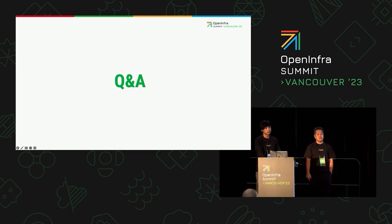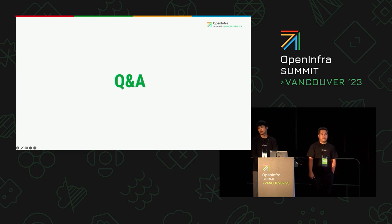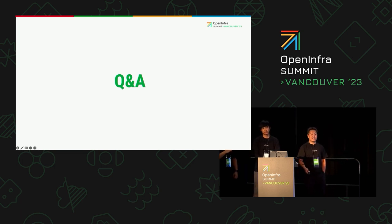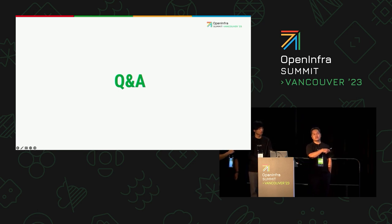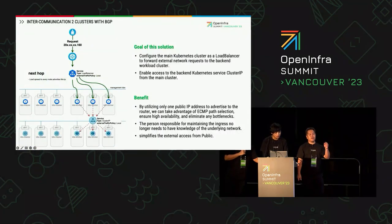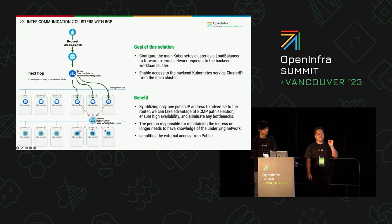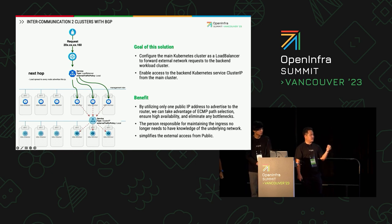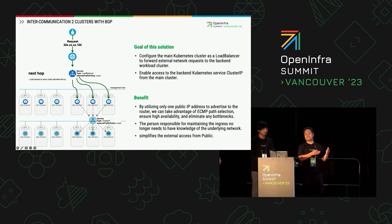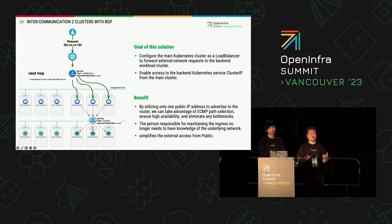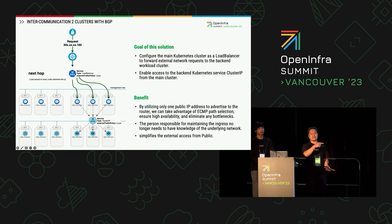Audience question: Can we scale to more clusters — two clusters, more clusters? Was that tested? Response: Yes. When we peer BGP only to the master nodes, the master nodes act as route reflector servers. If we scale the worker nodes, no reconfiguration or additional BGP configuration is needed between Kubernetes and the BGP router, because the master node as route reflector server propagates routes from the BGP router to the worker nodes. It only keeps BGP peering between the BGP router and the three master nodes.